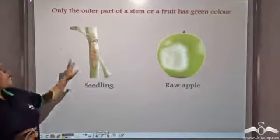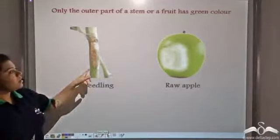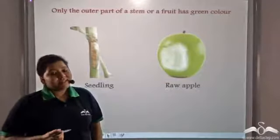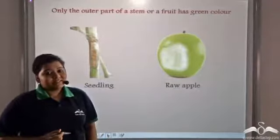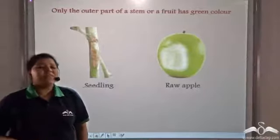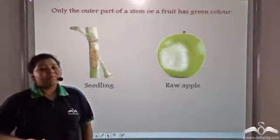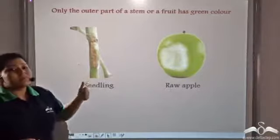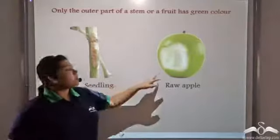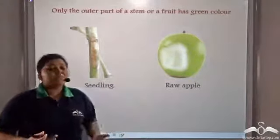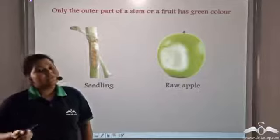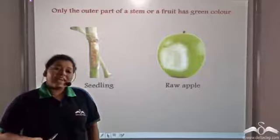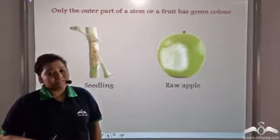Only the outer part of a stem or a fruit has the green colour. Why is that? We saw that chlorophyll is formed in the presence of light. Since only the outermost part of a seedling or a plant or a fruit is exposed to sunlight, chlorophyll will be formed in the chloroplasts and these chlorophyll will help in the process of photosynthesis.